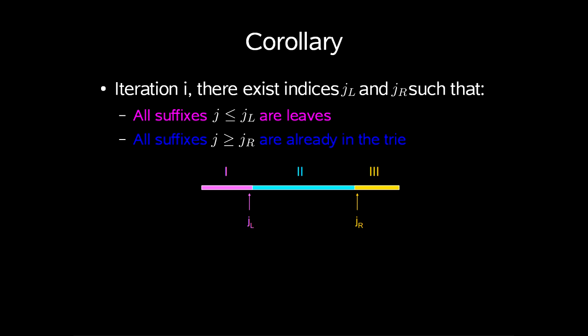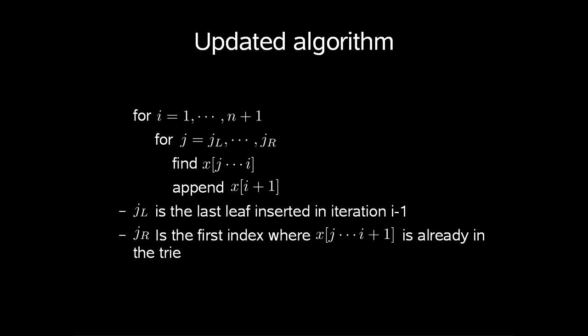From these two parts of the lemma, we are given a corollary. In iteration i, there exist indices jl and jr such that all suffixes j less than equal to jl are leaves, and all suffixes j larger than equal to jr are already in the tree. This is explained using this drawing of a string. So let's look at the consequences of this corollary. We know that 1 and 3 are free operations. We can update our algorithm to look like this.